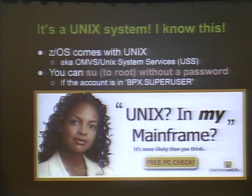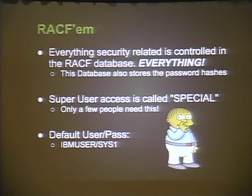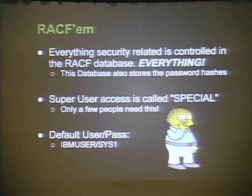There's also a feature called surrogates on mainframes where you can give someone permission to run commands as you. If I give you surrogate authority, you can also su to my Unix account without knowing my password and start issuing commands. RACF — Resource Access Control Facility — is where everything security-related is controlled: users, groups, files, Unix access. That BPX super user setting lives right in the RACF database.